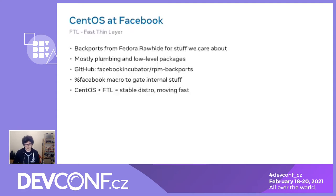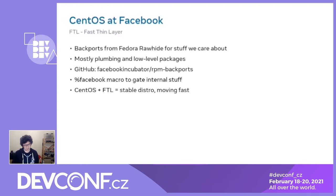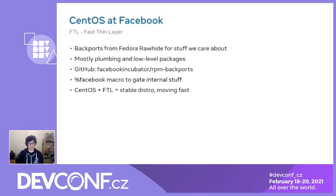The approach we've generally taken at Facebook is to run a CentOS base and then backport on top of it what we end up needing from Fedora Rawhide. This is generally things that are system plumbing — either packages we work on closely with upstream so we want the latest master, or low-level system packages. We try to publish our backports on GitHub, and we're trying to make this easier to consume. The combined approach gives us a stable distribution that can move as fast as we need in various components.